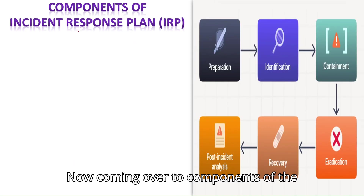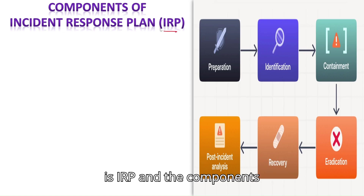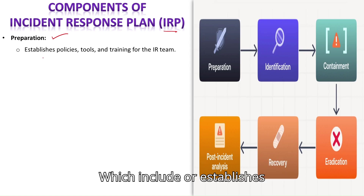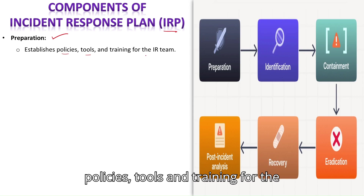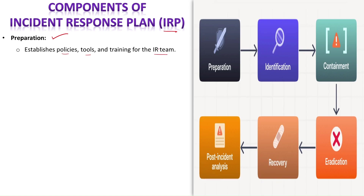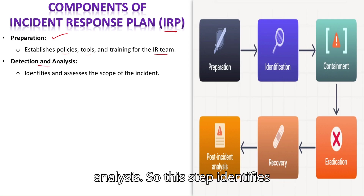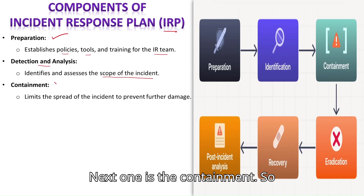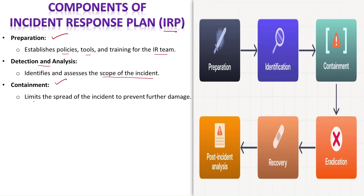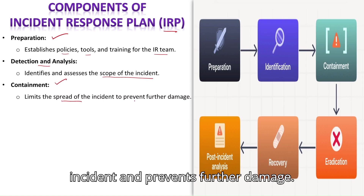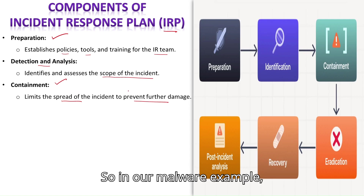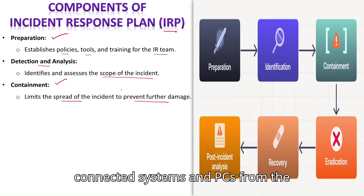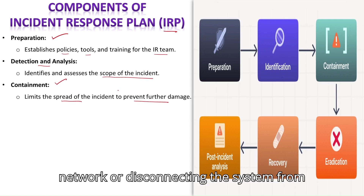Now, coming over to the components of the Incident Response Plan (IRP). The components — also referred to as steps or processes — include: Preparation, which establishes policies, tools, and training for the incident response team. Detection and Analysis, which identifies and assesses the scope of the incident. Containment, which limits the spread of the incident and prevents further damage. In our malware example, spread can be prevented by isolating the affected systems or disconnecting them from the network.